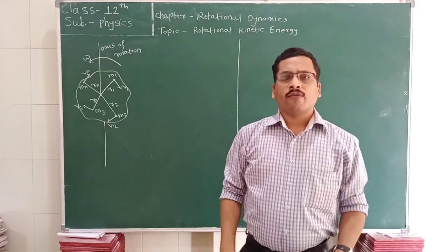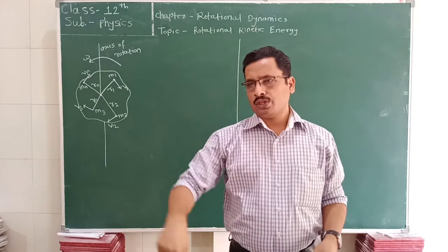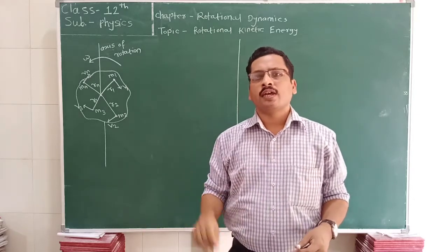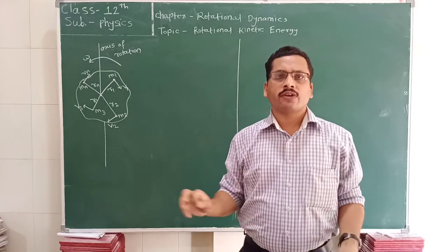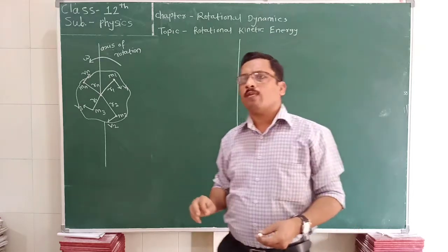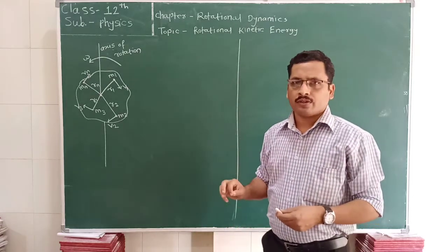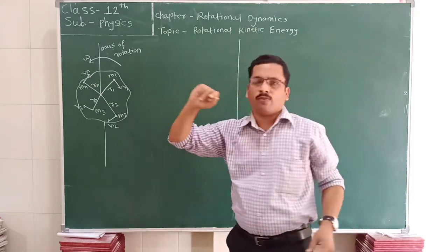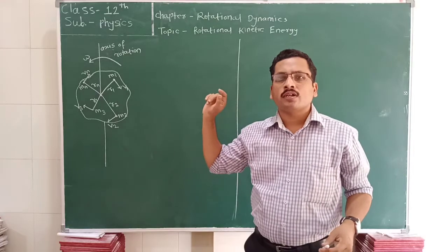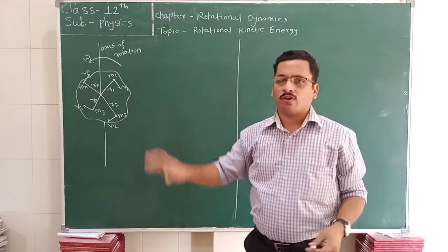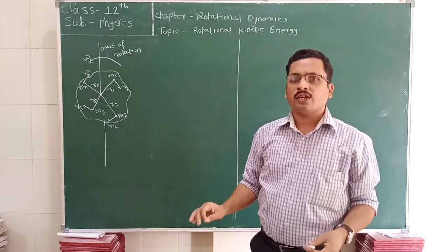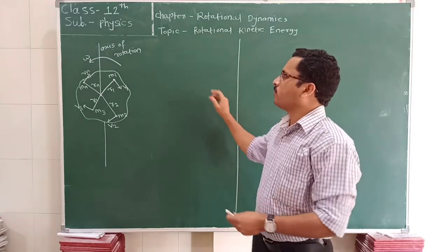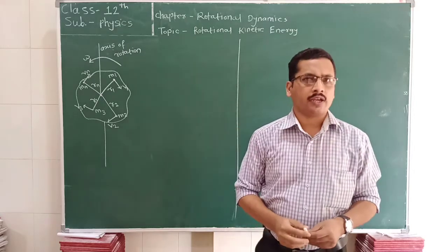We know that when a body performs linear motion, its kinetic energy is given by the simple relation ½mv². Similarly, when the body is rotated about the axis of rotation, what is the rotational kinetic energy of the body? In this section, we are going to discuss the formula of this rotational kinetic energy.